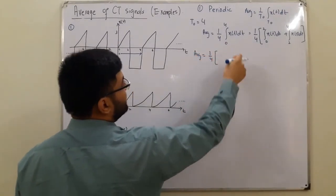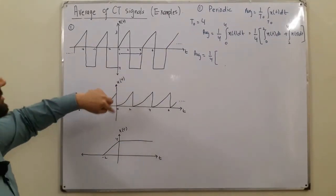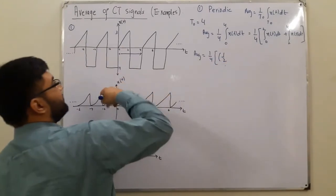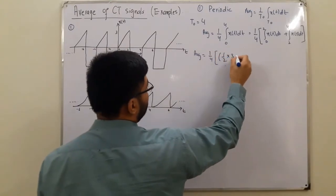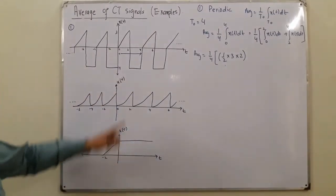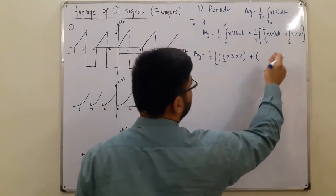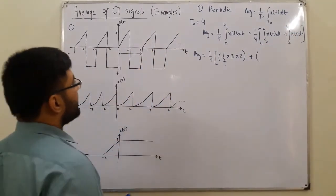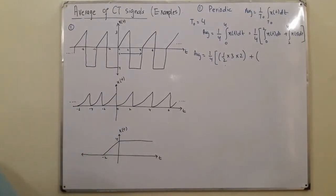So the average would now equal 1 over 4, and x of t dt. So have a look, this is a triangle. A triangle means 1 over 2, half of the height multiply base, so 3, multiply 2. And then you have a rectangle. You have length multiply base, so 2, and this time we have a negative 4.